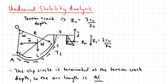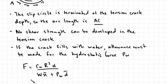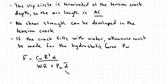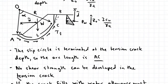If the tension crack fills with water, the result is a hydrostatic force acting inside the crack, which must be considered in the factor of safety. The resisting moment is the shear force multiplied by the radius, and the disturbing moments include both W multiplied by x and the hydrostatic force in the tension crack multiplied by d, giving plus Pw multiplied by d. Because this force acts clockwise relative to the centre of the circle, it is a disturbing moment.